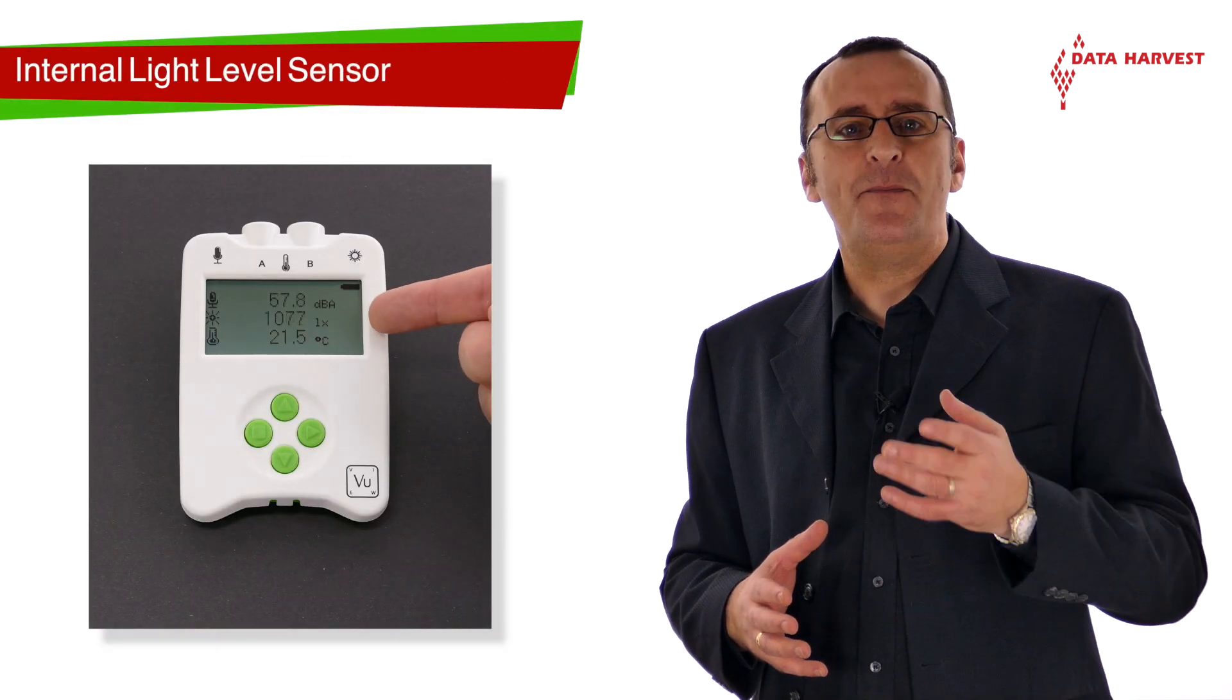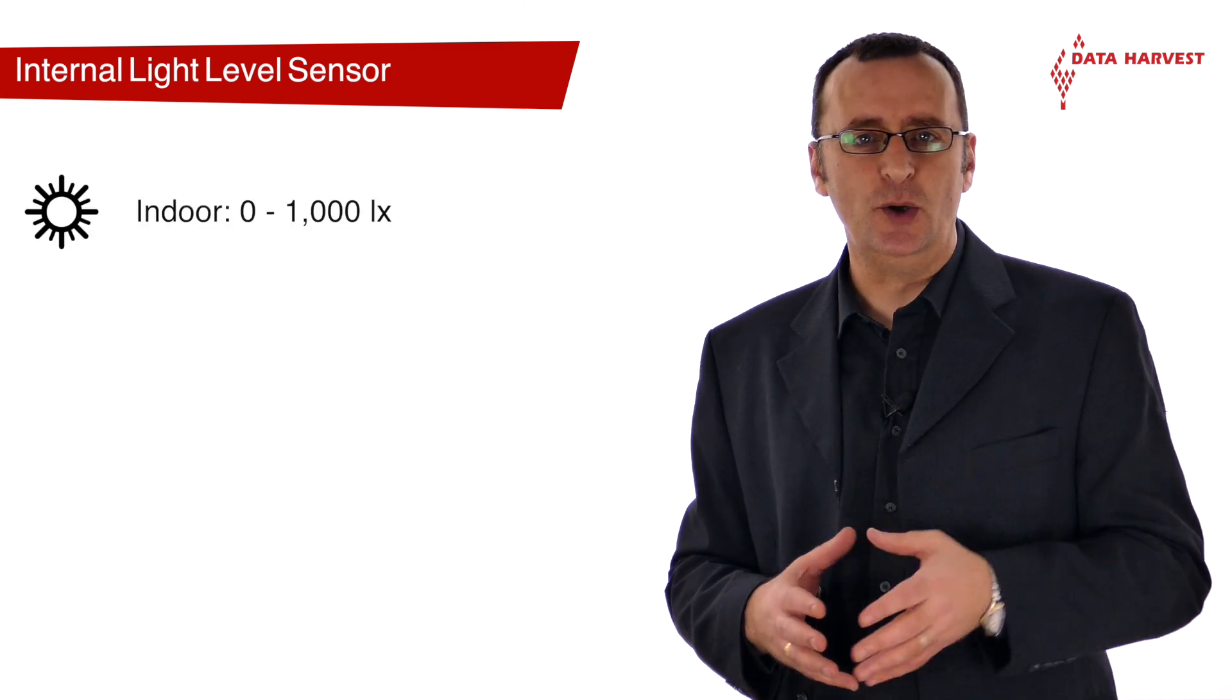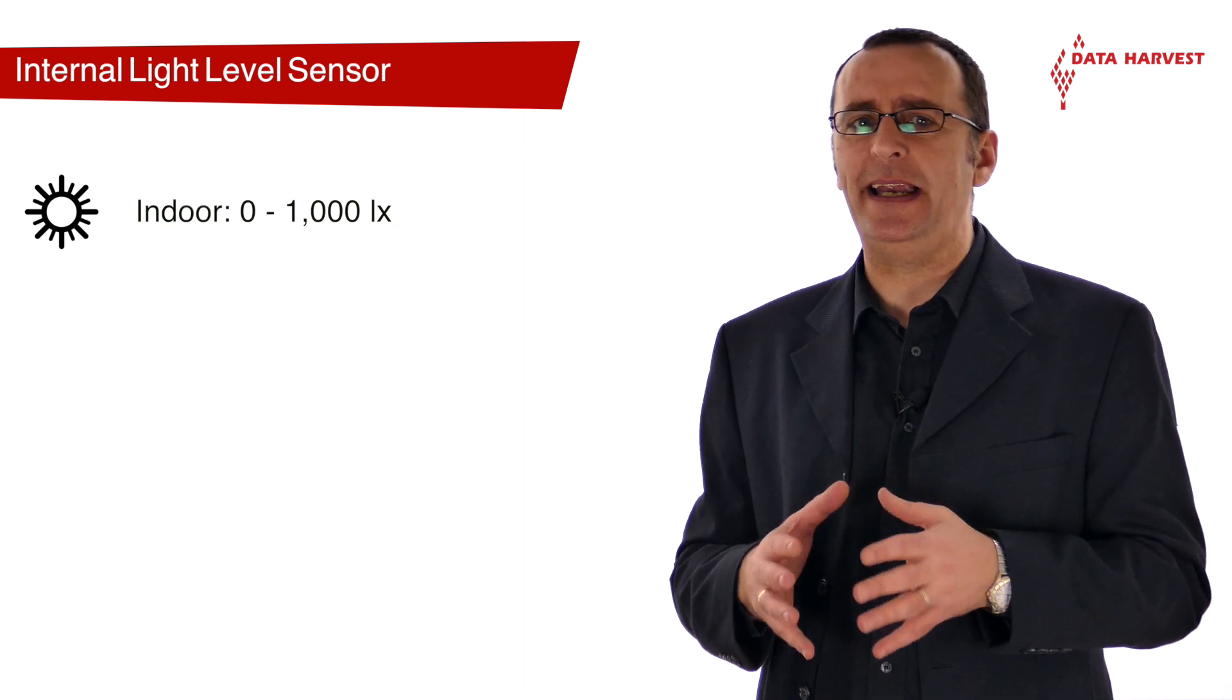The light level sensor measures the intensity of light in lux. VIEW has three ranges. Indoor, 0 to 1000 lux, is for classroom use where light levels are normally low.